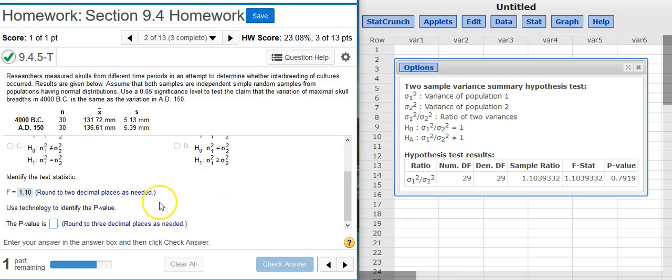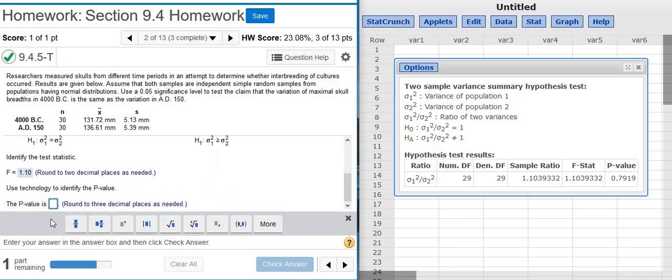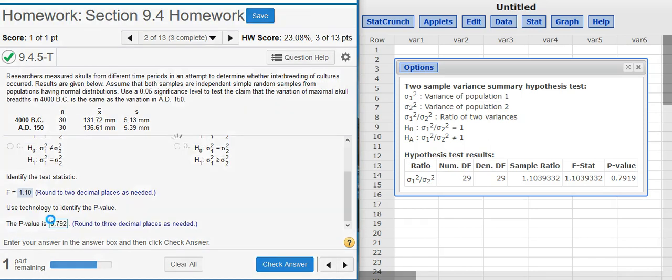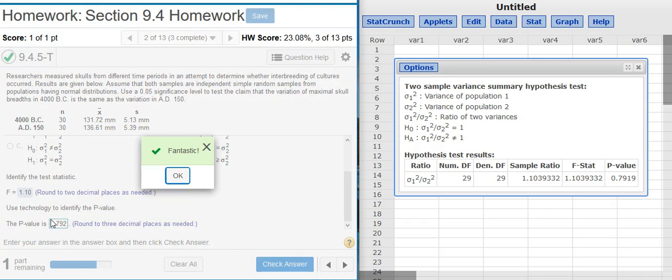Now, I'm asked for the p-value, and the p-value is there in my results window, that last value there at the end of the table. I'm asked to round to three decimal places. Fantastic!